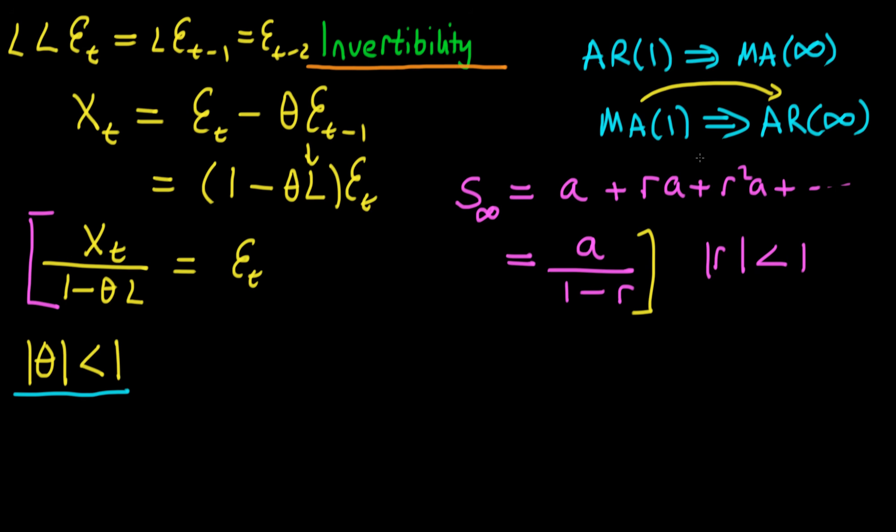Okay so when we do that it turns out that we can write essentially this whole left hand side as an infinite geometric series. So we can just use this expression up here on the top. So we have that this is equal to, we're going to have the first term is going to be XT and then we're going to have theta L times XT and then we're going to have theta squared L squared times XT etc at infinitum. And then on the right hand side we just have that this is equal to epsilon t.